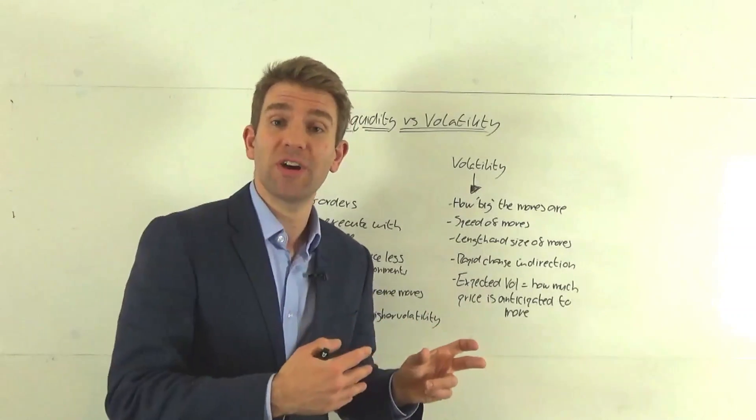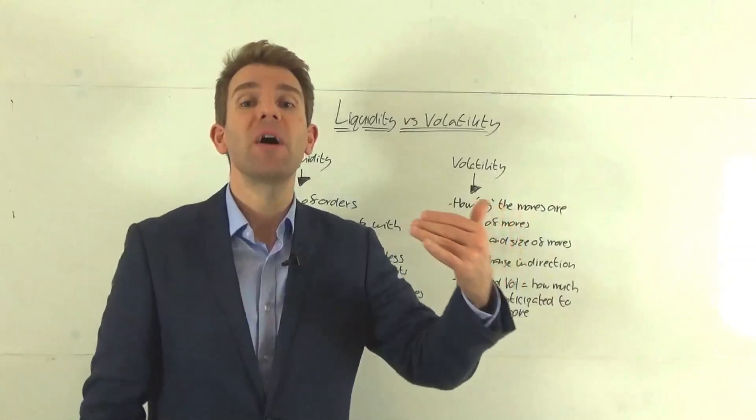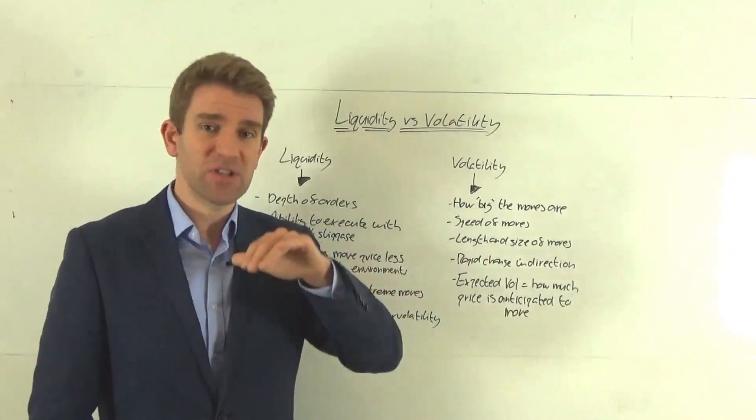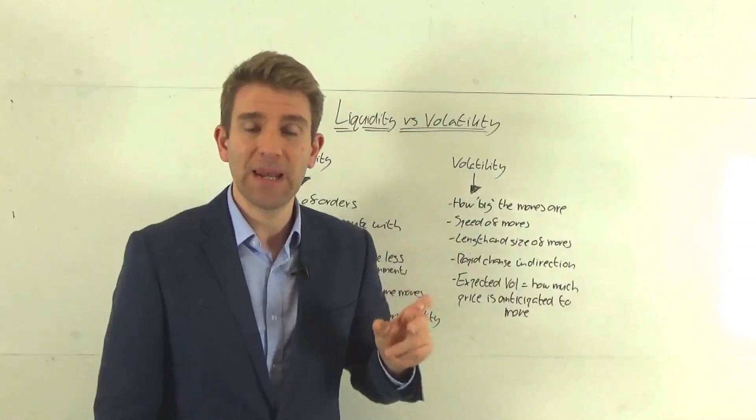So if someone sold 100 contracts into that, it's not going to move price. If they sold 3,000, it would move price one tick down. It would take the first one and then it would take the rest out of the second layer and leave a little bit left.